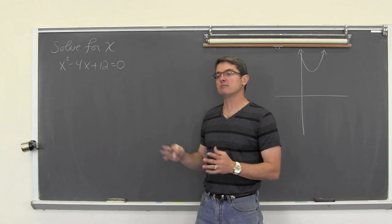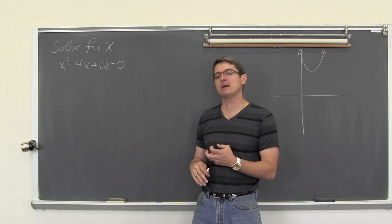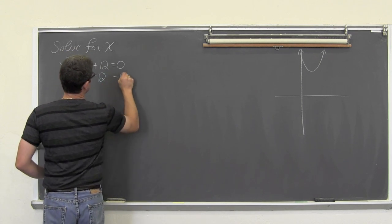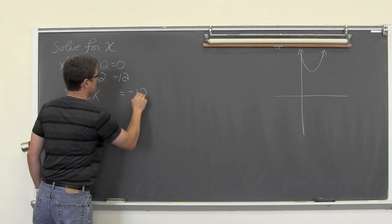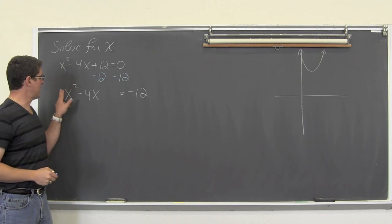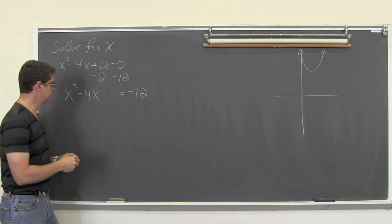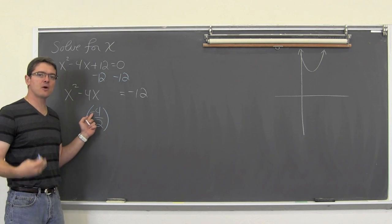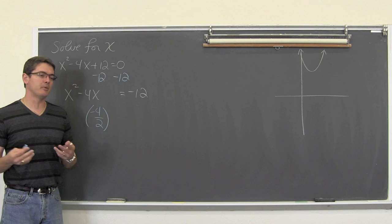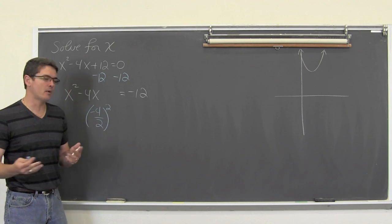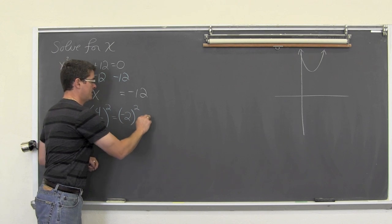Following the steps, we isolate the x terms and move the constant to the right. Subtracting 12 from both sides gives us x² − 4x = −12. Now the two x terms are alone on the left, the leading coefficient is one, and the constant is on the right. We are ready to complete the square. We take half of b: negative 4 divided by 2 is negative 2, squared gives us 4.